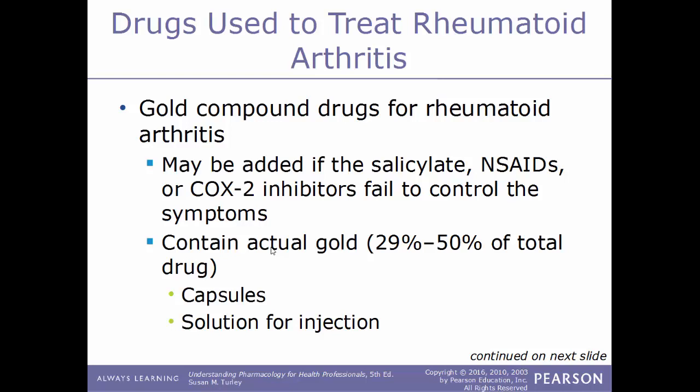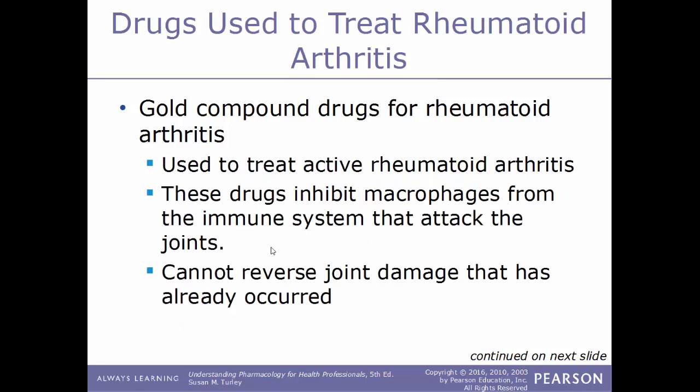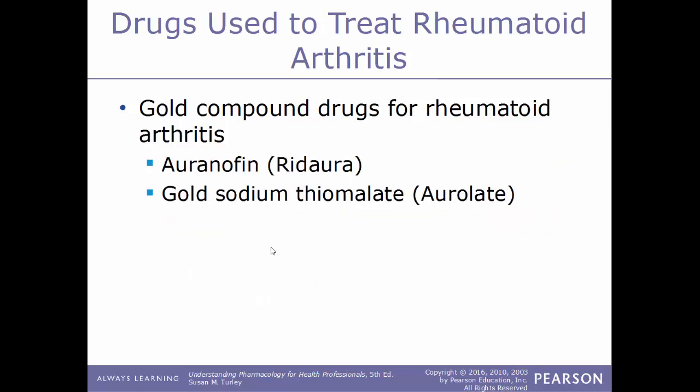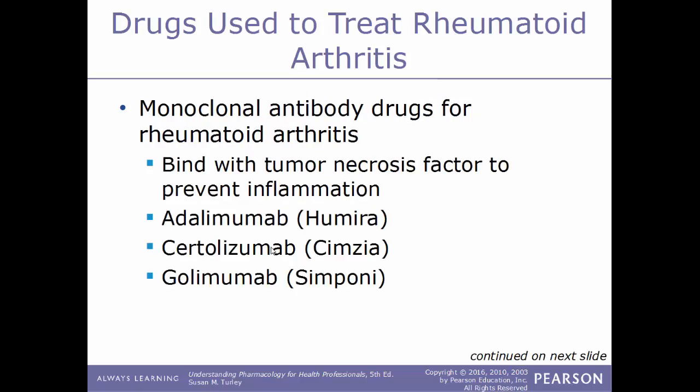Another type of drug used to treat rheumatoid arthritis is gold compound drugs. These may be added if salicylates, NSAIDs, or COX-2 inhibitors fail to control symptoms. These compounds actually contain gold — anywhere from 29% to 50% of the total drug — and can be given as capsules or in injectable solution. They work by inhibiting macrophages from the immune system that attack the joints, but unfortunately cannot reverse joint damage that has already occurred. Examples include auranofin (Ridaura) and gold sodium thiomalate (Aurolate).